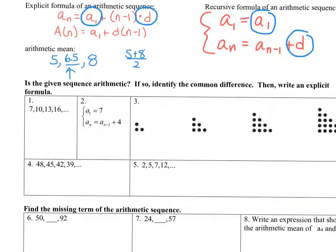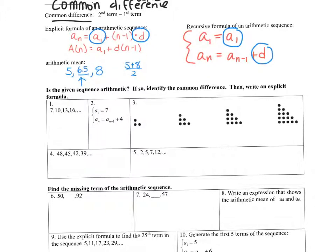Problem 1: Is the given sequence arithmetic? If so, identify the common difference and write an explicit formula. The sequence goes up by 3, so the common difference is 3 — yes, it's arithmetic. Using the explicit formula: a sub n equals 7 plus (n minus 1) times 3, where 7 is the first term and 3 is the common difference.